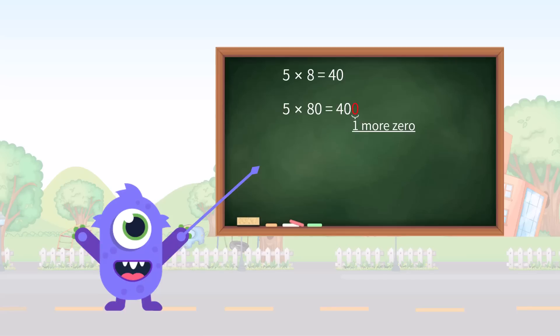If we add one more zero after eighty, five times eight hundred gets four thousand. Following this order of zero addition, we have four more zeros following forty in five times eighty thousand, which gives four hundred thousand kilometers as distance traveling to the moon.